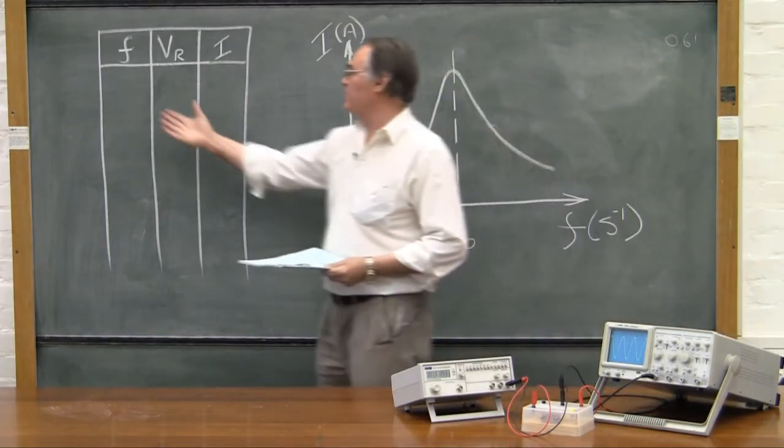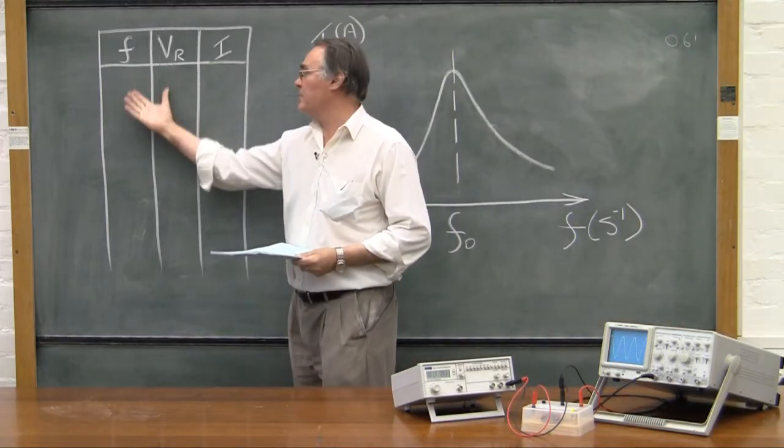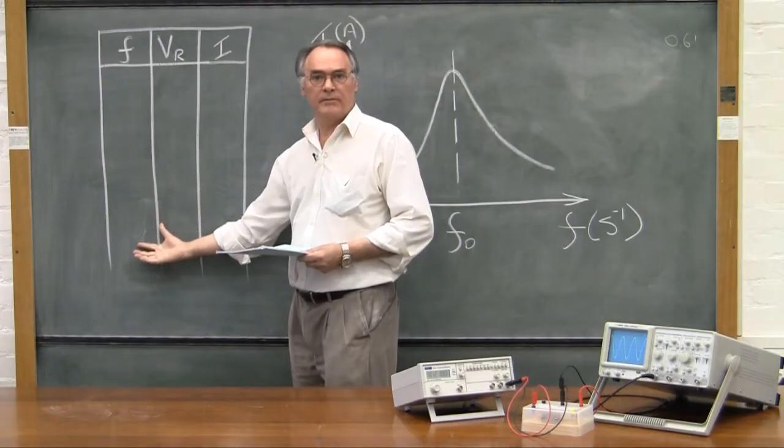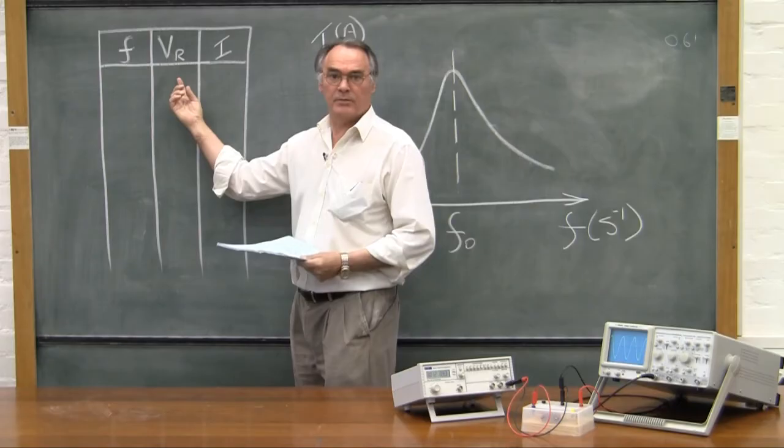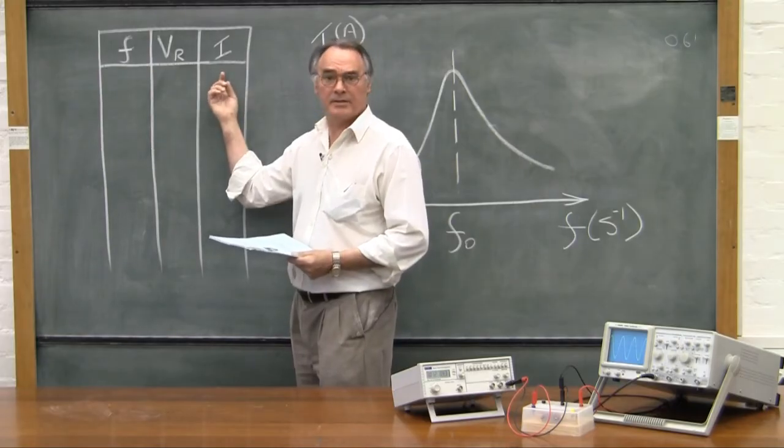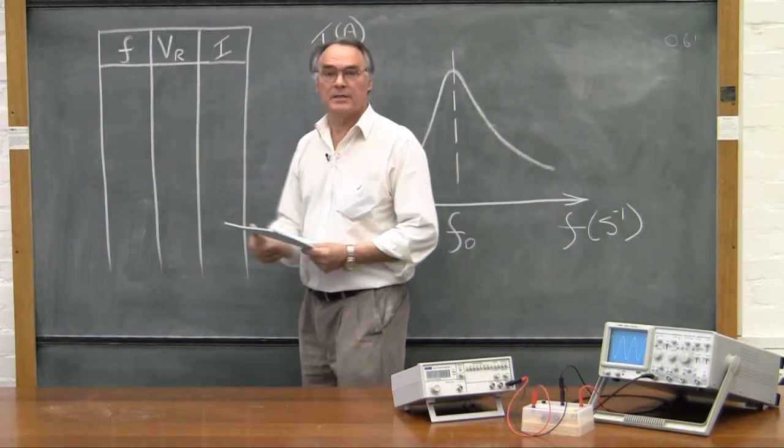Having collected all the data that you require, those are the frequencies and the voltages across the resistor, you're able to use these voltages and the resistor value that was given to you to calculate the currents at each of these frequencies.